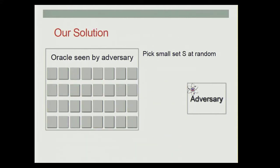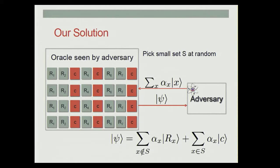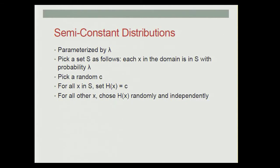Our solution is instead of picking just one X*, we pick a whole set S of possible inputs and respond to those inputs with C. When the adversary sends a superposition of X, we send back the response where for all X in the set S we respond with C, and for all other X we respond with R_X. This distribution is what we call a semi-constant distribution, parameterized by lambda: we go through each element in the domain and put it in S with probability lambda, then pick a random C, set the oracle output H(X) = C for all X in S, and choose all other outputs randomly and independently.